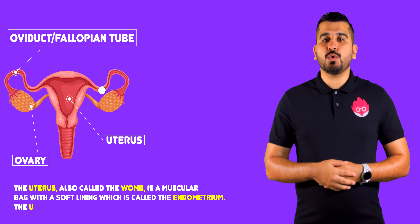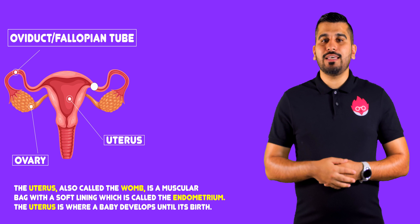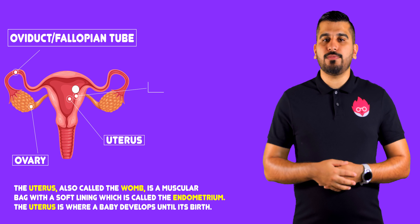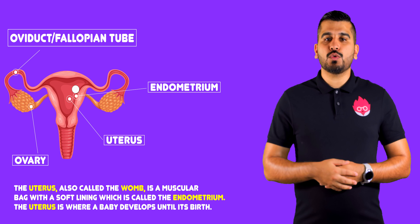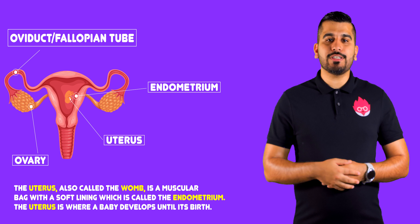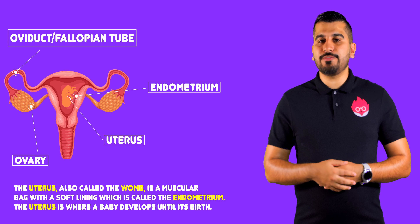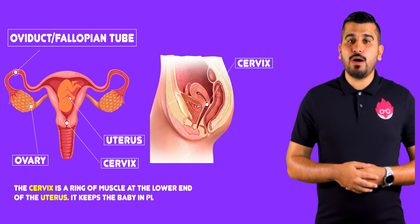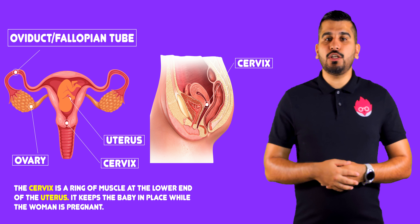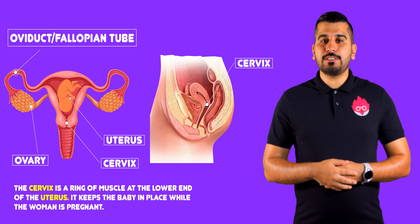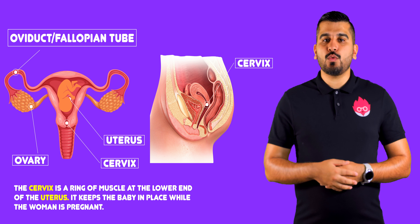The uterus, also called the womb, is a muscular bag with a soft lining called the endometrium. The uterus is where the baby develops until its birth. The cervix is a ring of muscle at the lower end of the uterus, and it keeps the baby in place while the woman is pregnant.